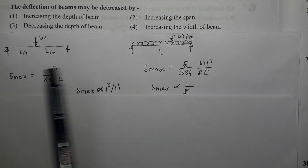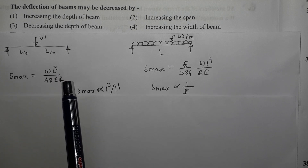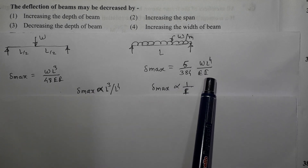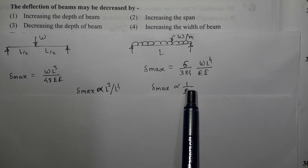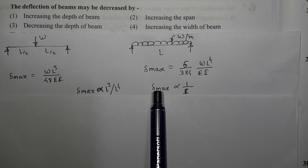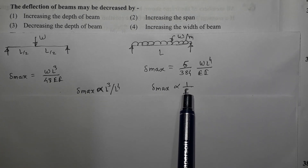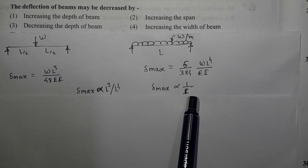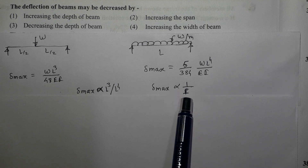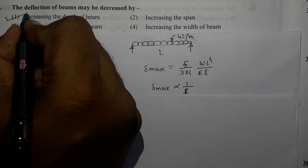Now looking at depth: in both formulae, delta max is inversely proportional to moment of inertia I. So if we increase the moment of inertia, delta max decreases. In order to increase the moment of inertia, we should increase the depth of the beam. Increasing the depth results in increased moment of inertia, and as moment of inertia increases, maximum deflection decreases. Therefore, the correct option is option number 1.